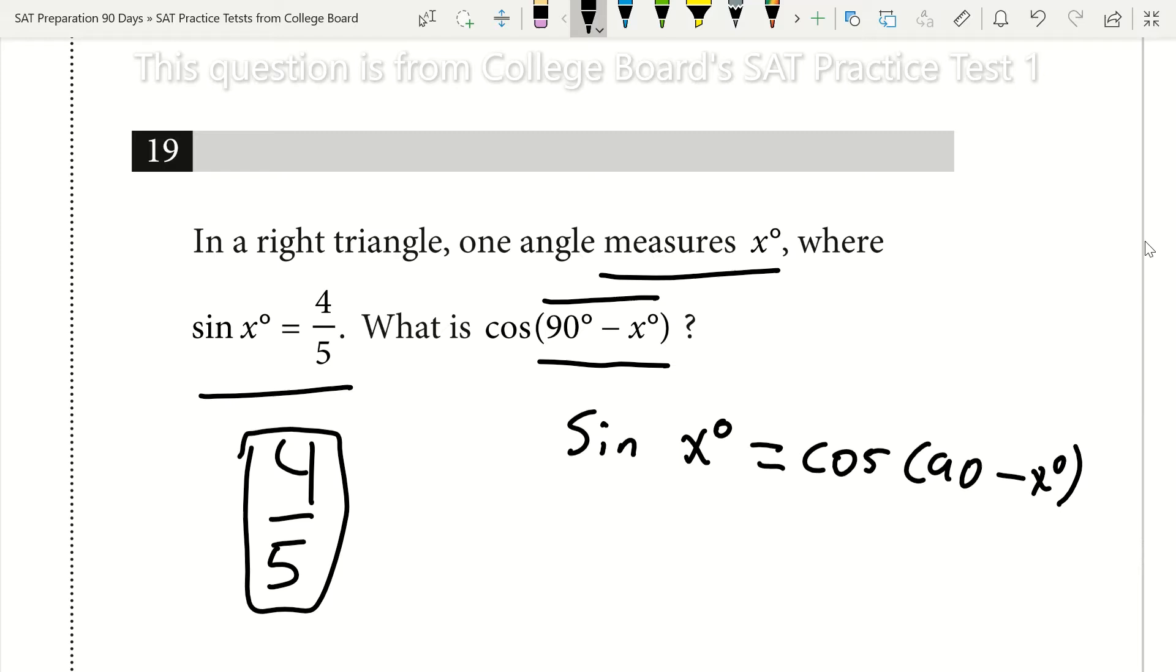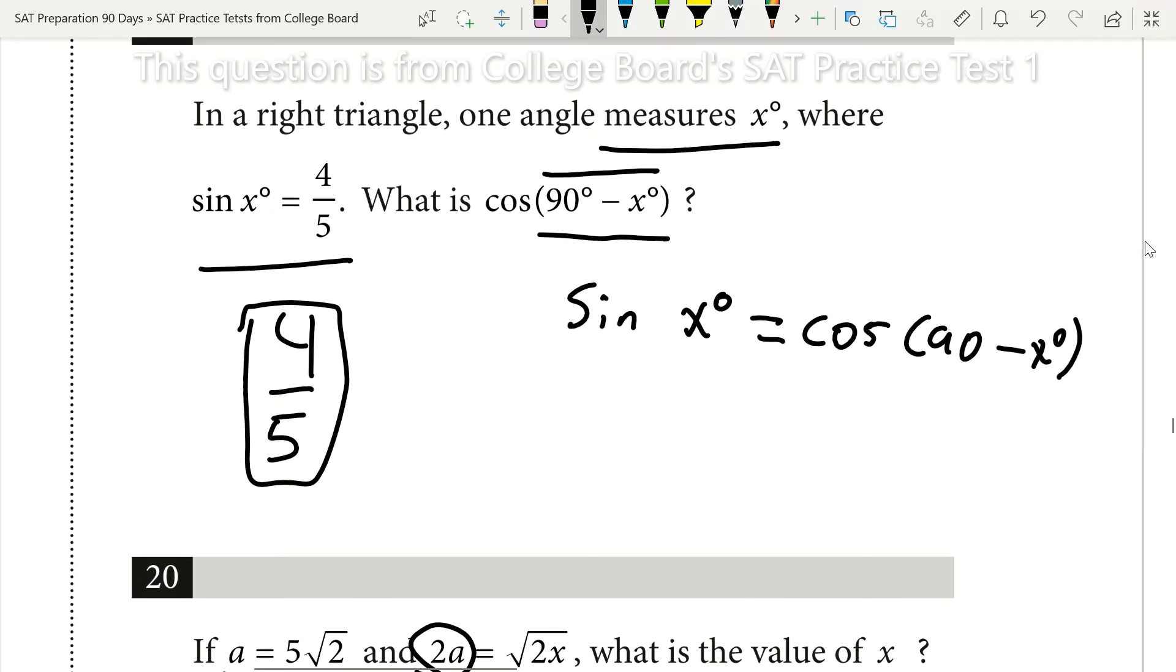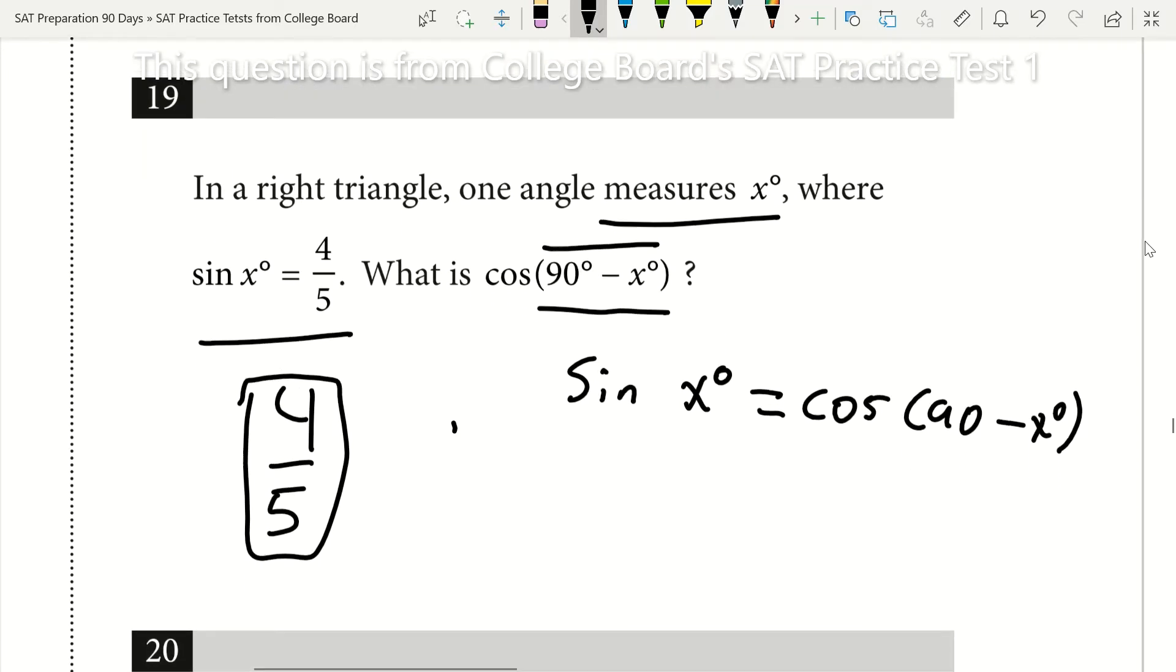So why is this? Well, I can show you this very quickly. If I was to draw a right triangle, let's go ahead and draw a right triangle. We'll label this angle right here x, and then this angle right here we'll call that angle y.